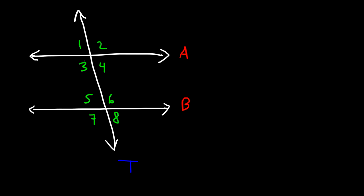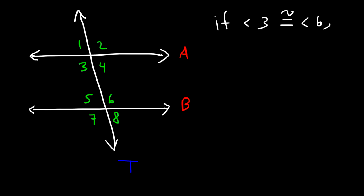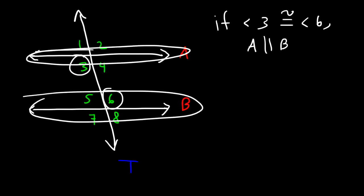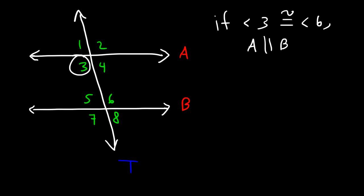The first thing you need to know is that if angles 3 and 6 are congruent, then the two lines are parallel — so A is parallel to B. Angles 3 and 6 are known as alternate interior angles. They are on alternate sides of the transversal: angle 3 is on the left side and 6 is on the right. They are also in the interior — between the two lines — so they are alternate interior angles.